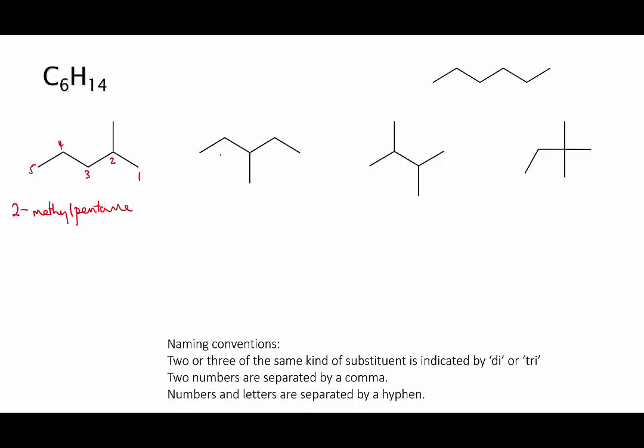Okay, in the second one, the substituent is right in the middle. So it doesn't matter which end we start from when we number the main chain. Either way, it's going to be on carbon number three. So this isomer is called 3-methylpentane.